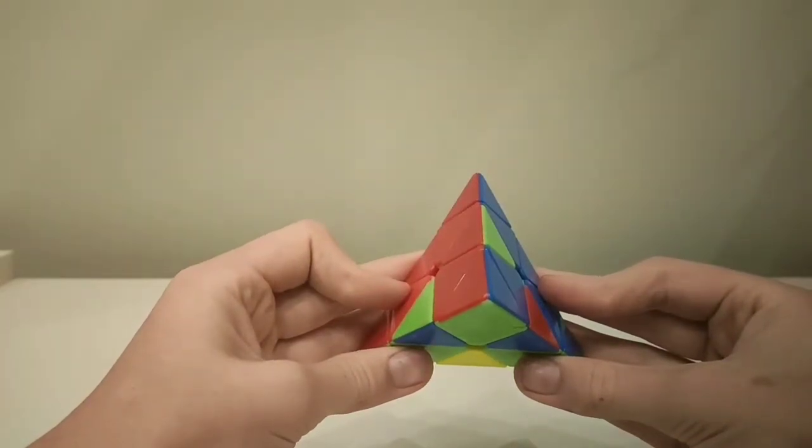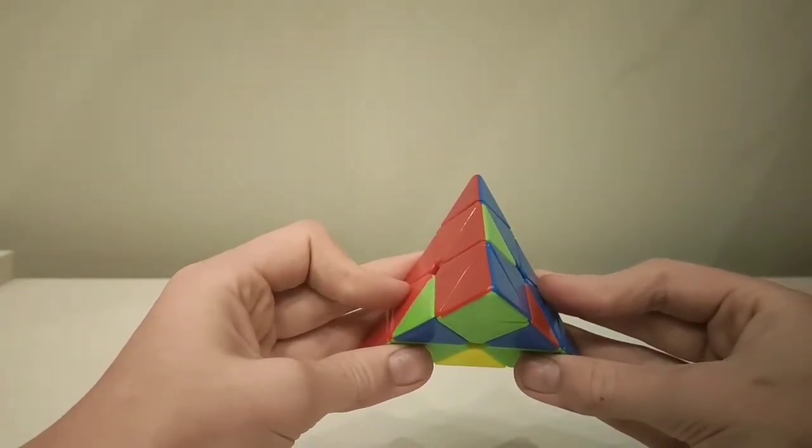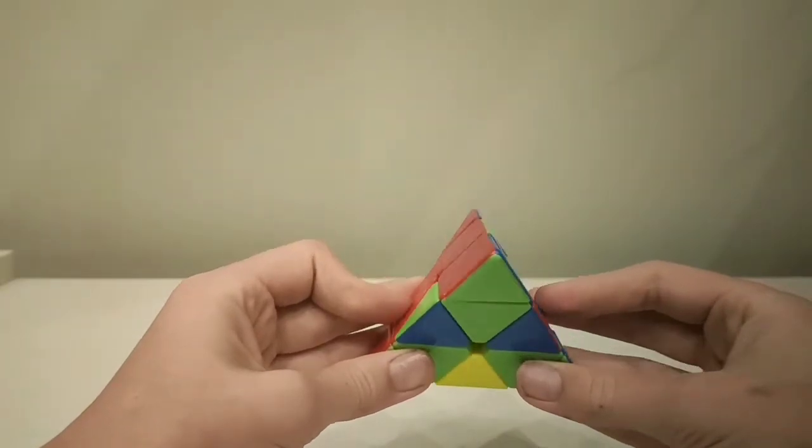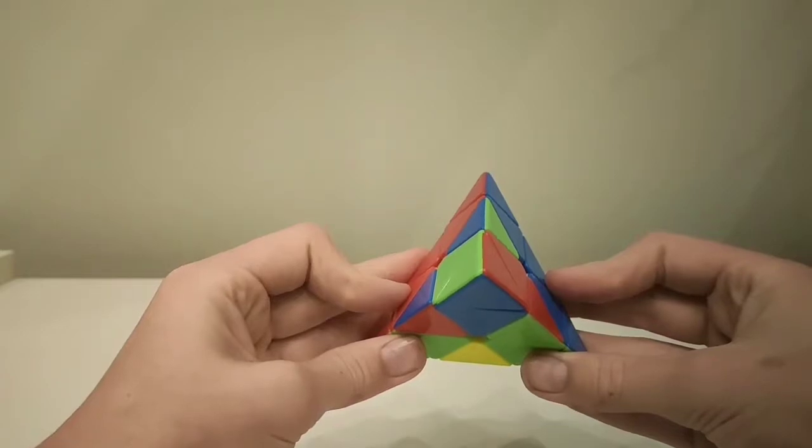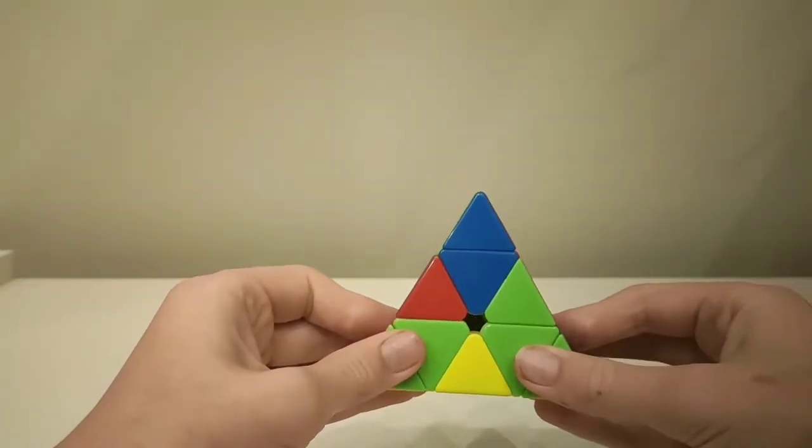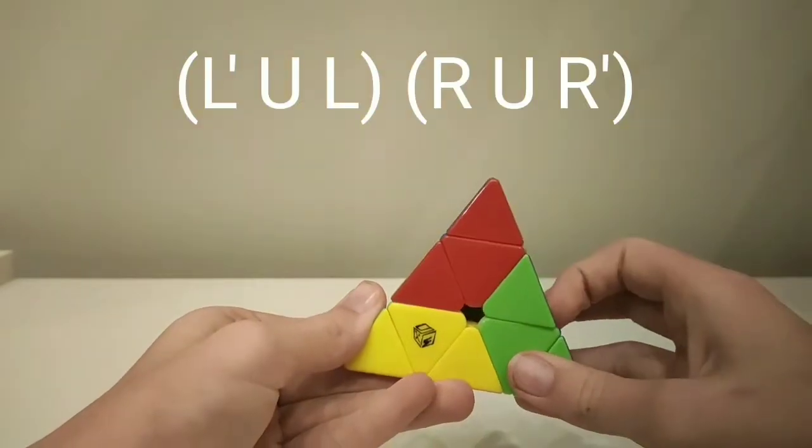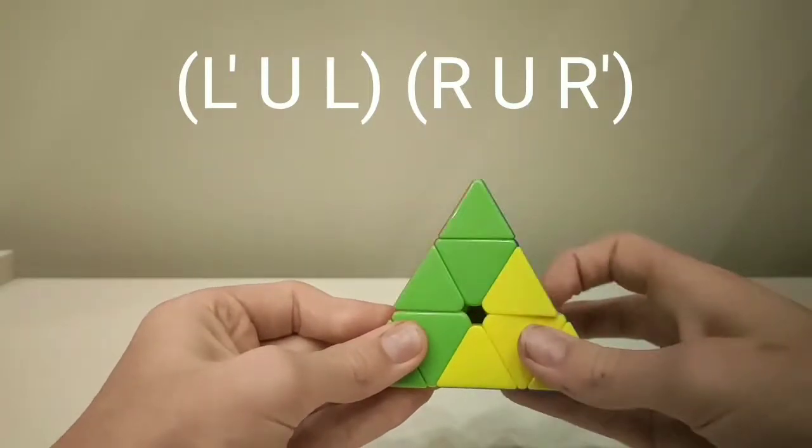This is the fourth case, where there are three bars. You must hold it with the bar to your right. The algorithm for this is L' U L R U R'.